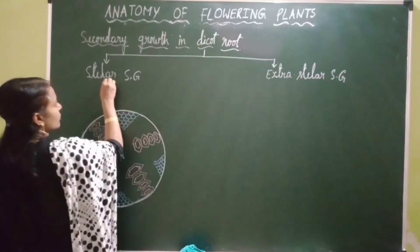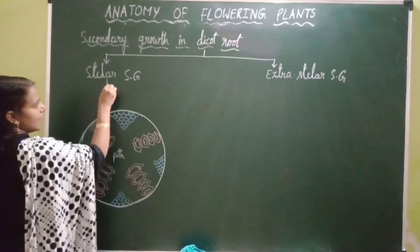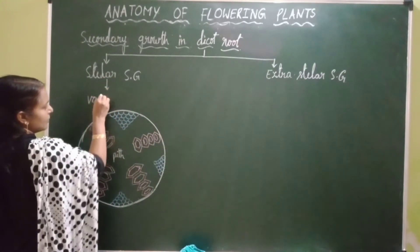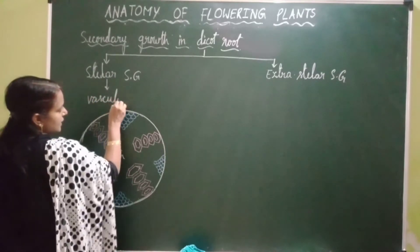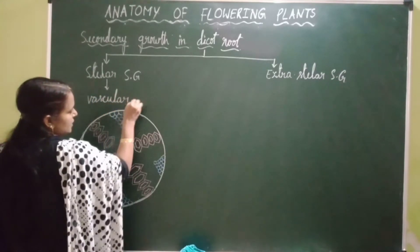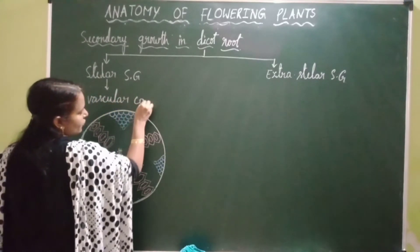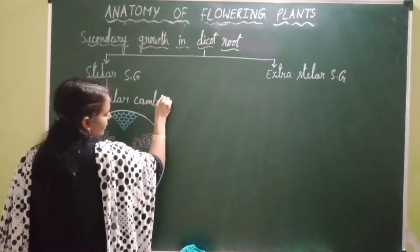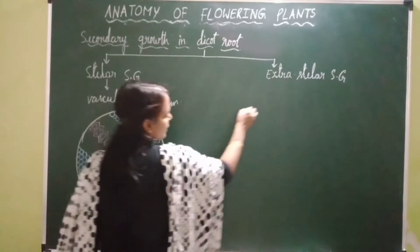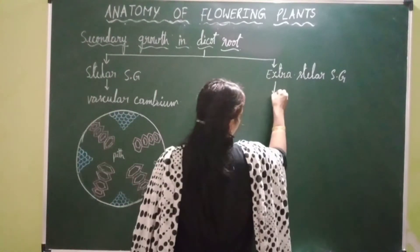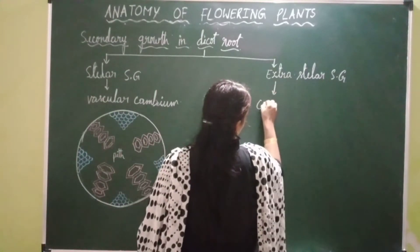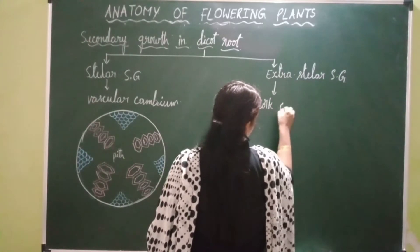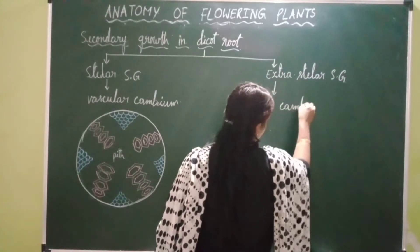The stelar secondary growth occurs by the activity of vascular cambium, whereas extra stelar secondary growth occurs by the activity of cork cambium — in the same way as in the case of dicot stem.